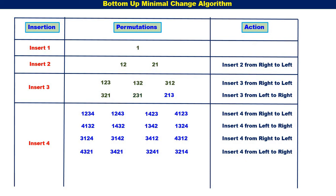Next, we should consider {2, 3, 1}. For {2, 3, 1}, it is right to left. When we insert 4 to the right of {2, 3, 1}, we get {2, 3, 1, 4}. Then {2, 3, 4, 1}. Then {2, 4, 3, 1}. Then {4, 2, 3, 1}. You can see 4 is moving from right to left.